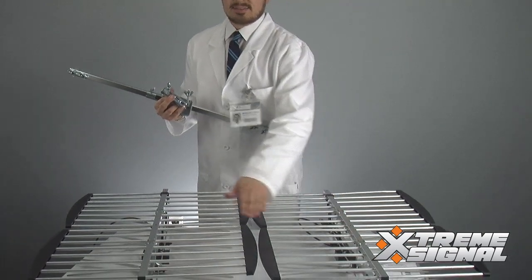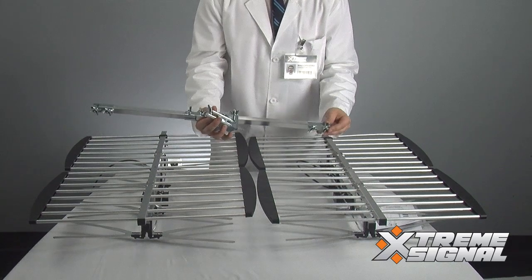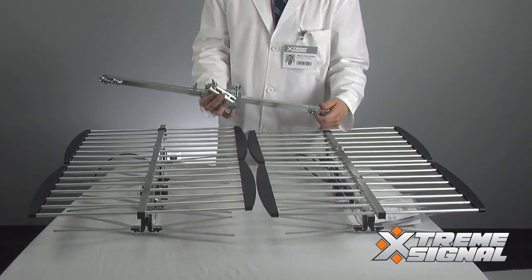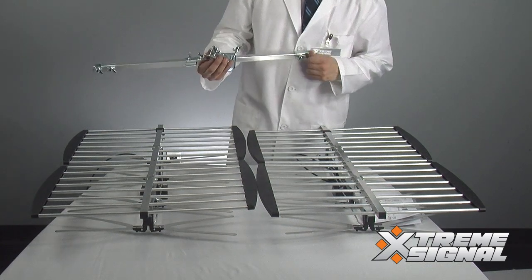The next step is to take the mounting assembly here, the one without the splitter, and attach it to the back of the antenna. You're going to notice two holes here and here. That's where we're going to want to put these wing nuts through to basically attach the two sides of the antenna together. So let's go ahead and do that.